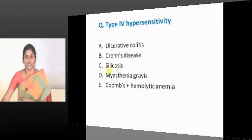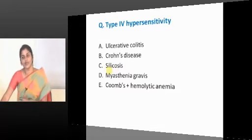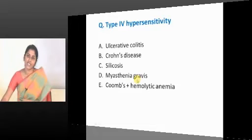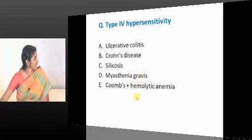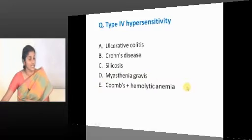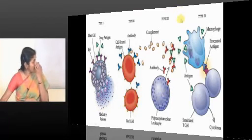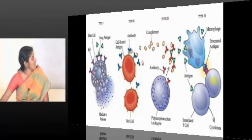Myasthenia gravis, do you have a granuloma? No. That comes under Type 2 hypersensitivity reaction. We will come to it later. Coombs positive hemolytic anemia comes under Type 2 hypersensitivity reaction. This is Type 4 hypersensitivity reaction. Type 1 we discussed in detail, and Type 4 again we discussed granulomatous conditions. Coming to Type 2 and Type 3.